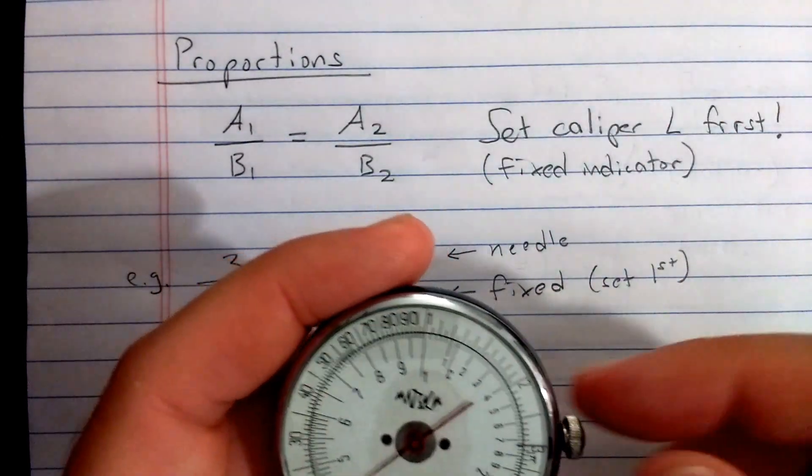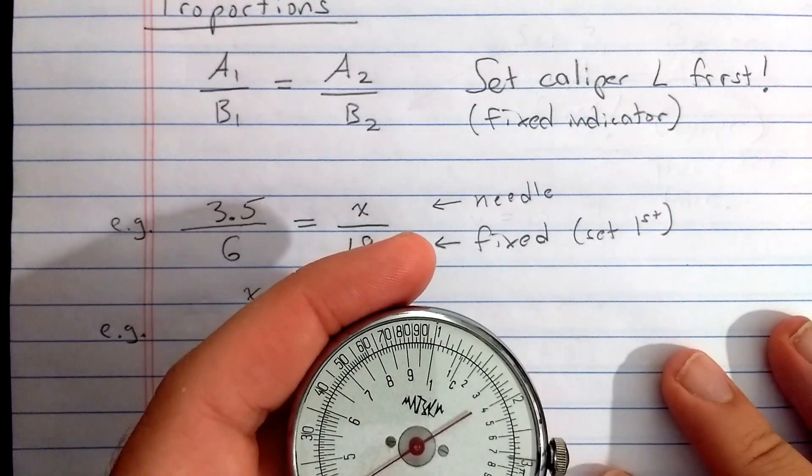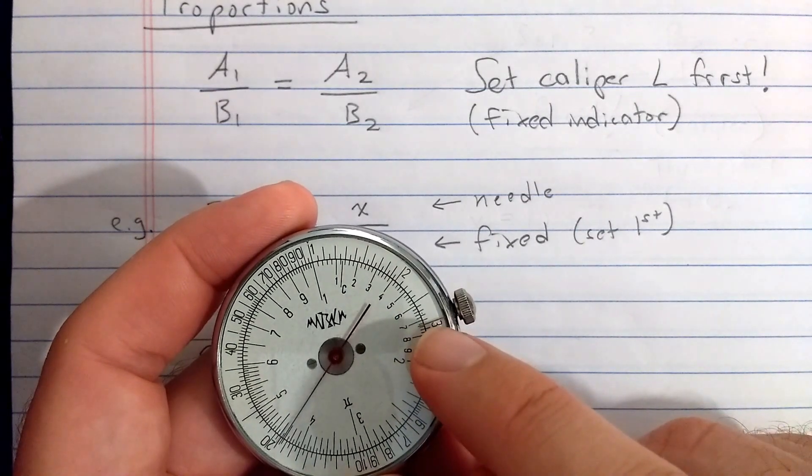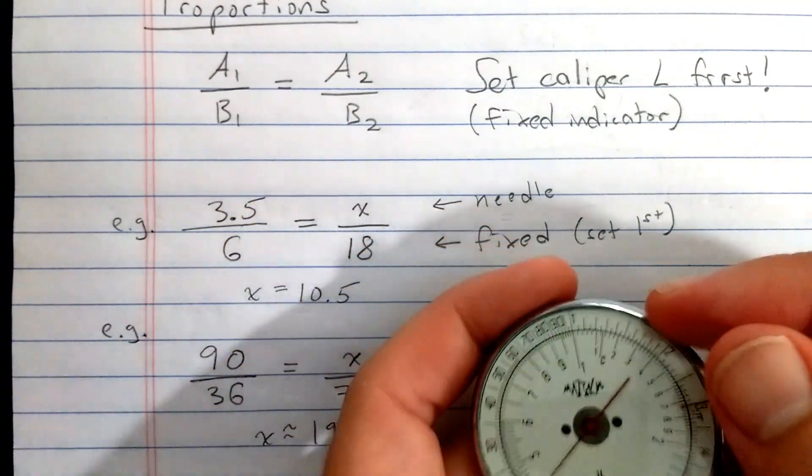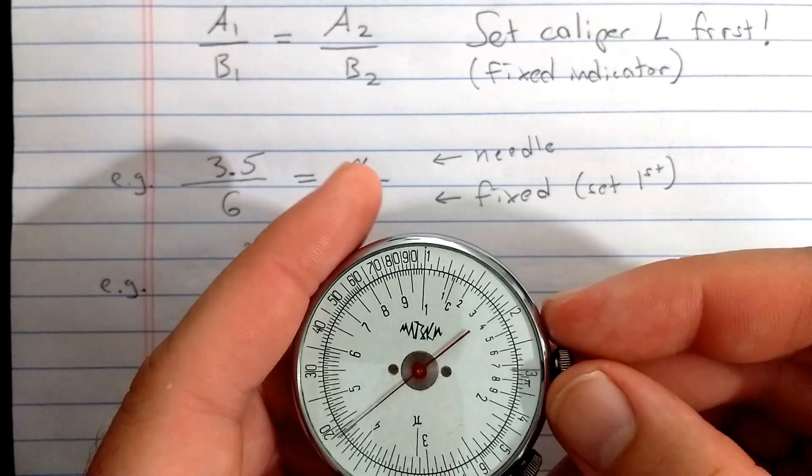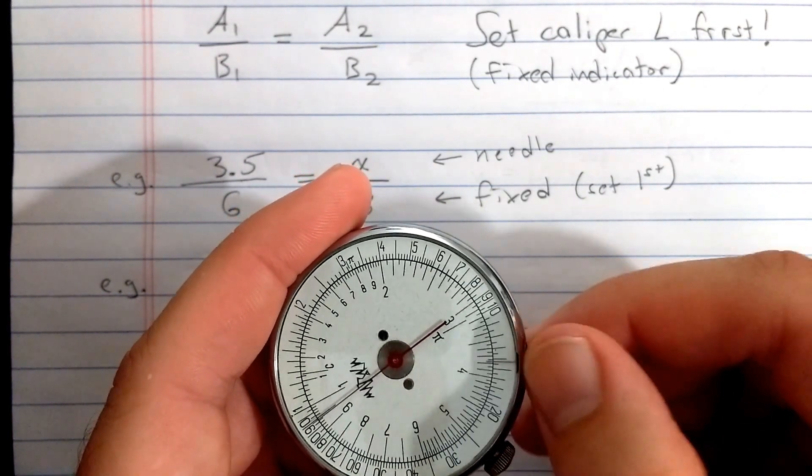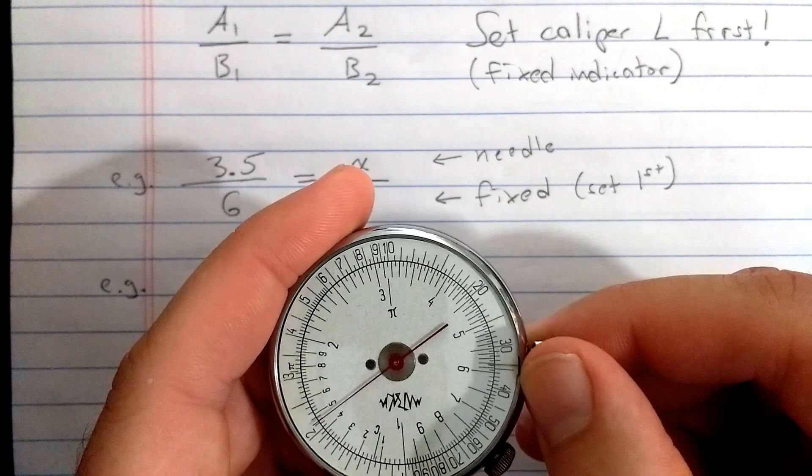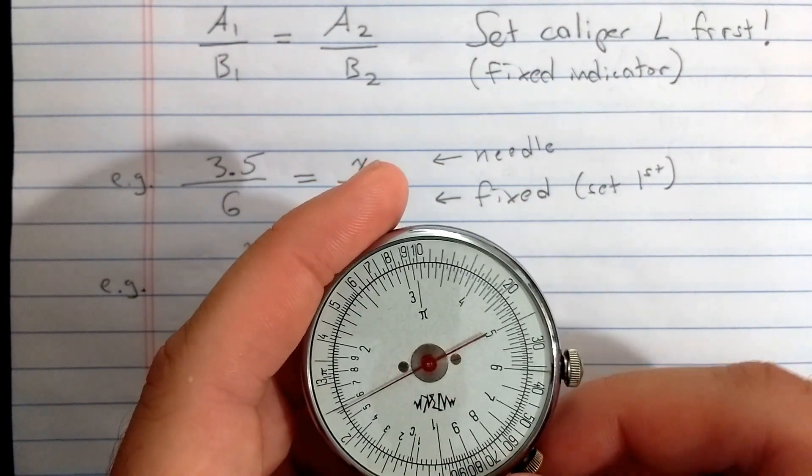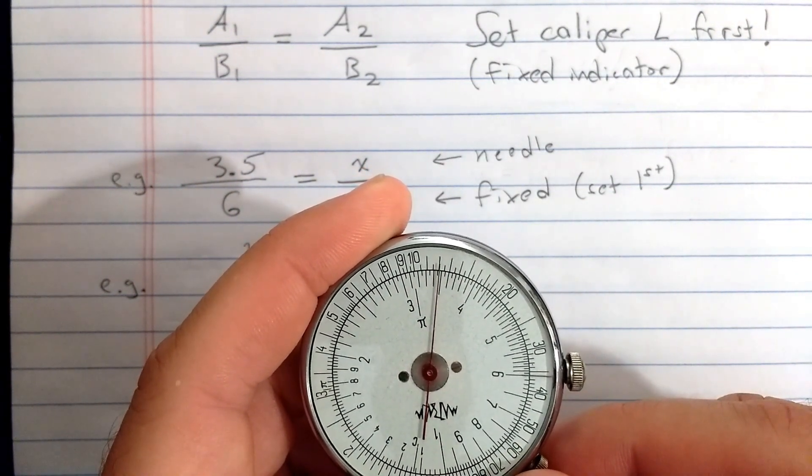So let's talk about how to compute proportions. The real trick is that you want to set the caliper's left end first. In other words, you want to set something here against the fixed indicator first. So let's solve this proportion. So here's what I'll do. I'll first set the fixed indicator to 6. You want to set that fixed indicator first, basically all the time. Then move the needle to 3.5.